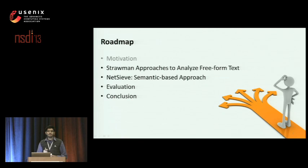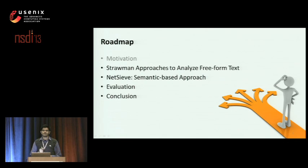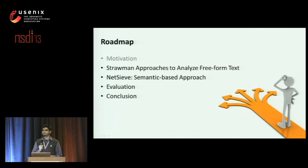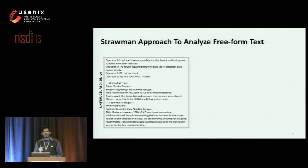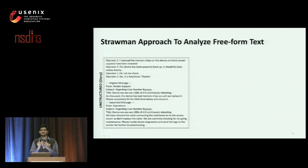Till now I've described our problem of analyzing network trouble tickets. Next, I will show you why strawman approaches are ineffective in analyzing freeform text. Then I'll show you how our system NetSieve addresses these challenges. Finally, I will show you our evaluation results and conclude. Remember, our goal is, given a ticket, to extract three key features: problems, activities, and actions.